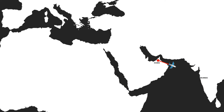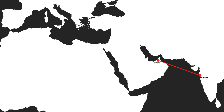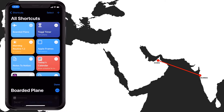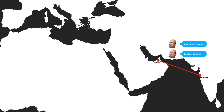I remember my first use case. When I boarded the airplane, I had to send an SMS to my mom and wife that I had boarded and was ready to take off. They lived in different cities and I had very little time. So with a shortcut, I sent two simultaneous messages at the same time. Similarly, when I landed, I had another shortcut programmed to tell them that I had landed safely.